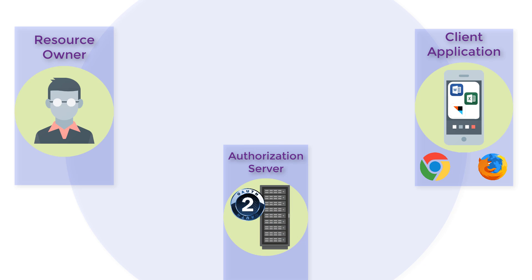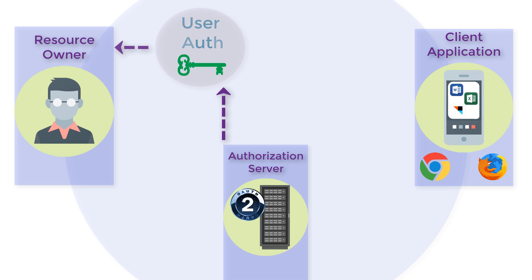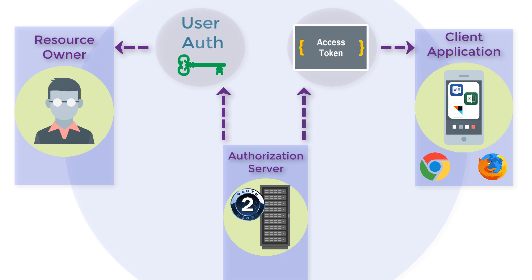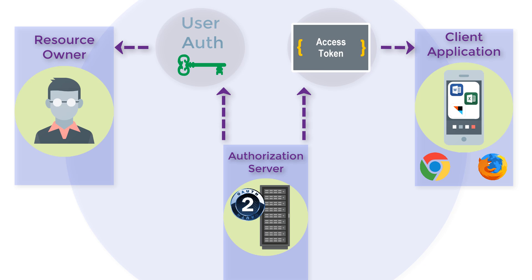OpenID Connect is needed because even though OAuth provides authorization, it doesn't provide authentication. With OAuth, the user authenticated and proved they were present to the authorization server, but the sole purpose of this was to create and grant an access token to the client application. The user didn't authenticate directly with the client application itself. OAuth provides a level of pseudo-authentication — a grant or license to access resources rather than information about the authentication itself.